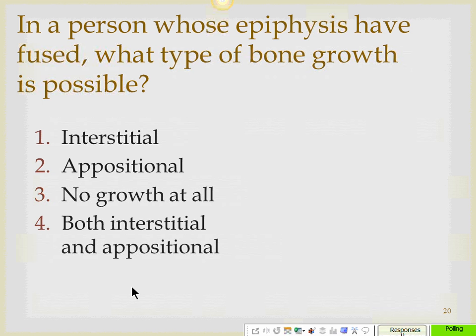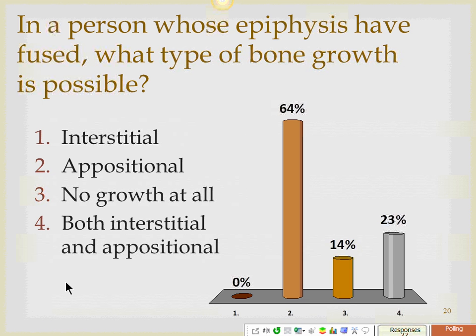In a person whose epiphysis has fused, appositional growth is possible — growth on the outside, in thickness — and that will occur throughout life. When you have mechanical stress you lay down bone on the outside. Interstitial growth only occurs as long as the epiphyseal plate is present. If the epiphyseal plate has fused, you cannot grow in length anymore.